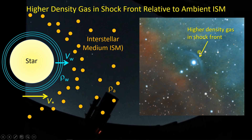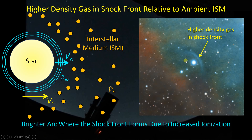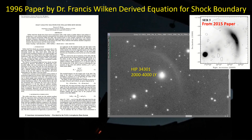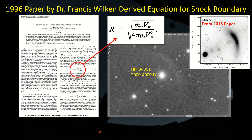What we ultimately have is a zone of gas that is more dense than the interstellar medium in front of or behind it. As a result, there's a greater chance of ionization because you have this pile-up of hydrogen and oxygen being ionized by the star. Because there are more particles in this region, we see a brighter feature in our images. As I went through the 2015 paper, they referred back to a 1996 paper by Dr. Francis Wolkin, whose work primarily produced the equation for that shock front boundary — a parabolic 3D shell sitting out in front of the moving star. He refers to an equation for the offset distance from the star to the stagnation point.